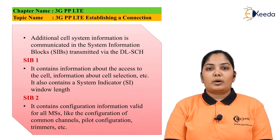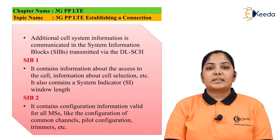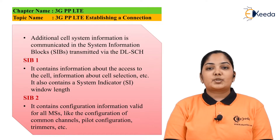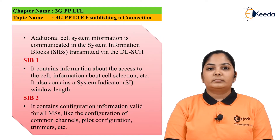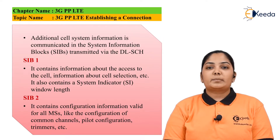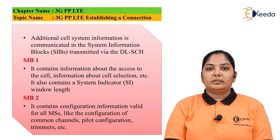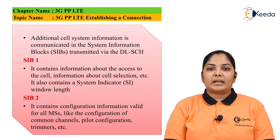The first system information block contains information about the access to the cell and also information about cell selection. Access to the cell tells how the channels are available in that particular cell and which cells are available. It also contains the system indicator window length, which is enabled for multiple transmission of SI messages, i.e. system information messages, within the window.